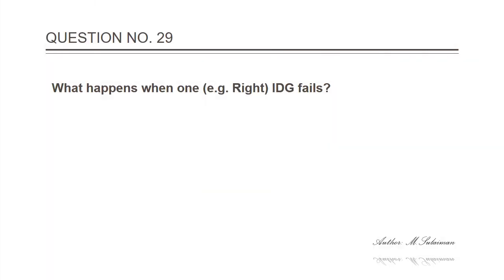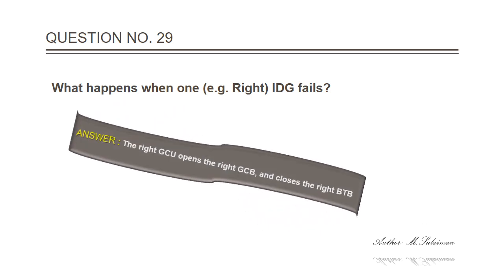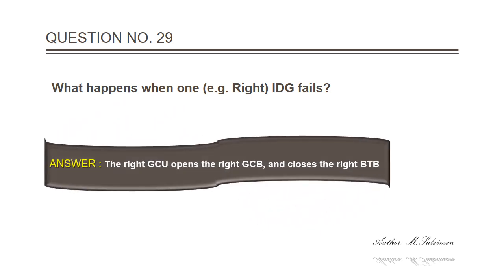Question 29: What happens when one — for example, the right — IDG fails? Answer: The right GCR opens the right GCB and closes the right BTB.